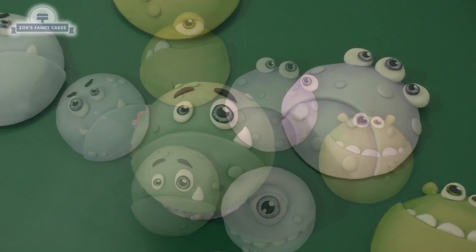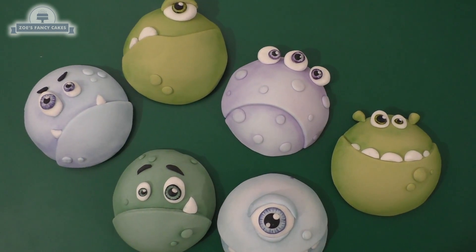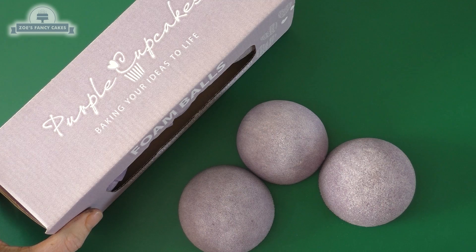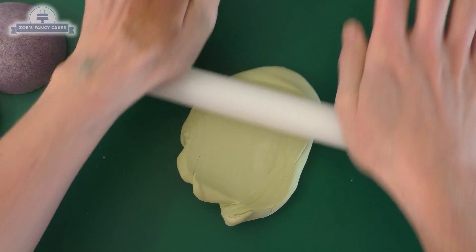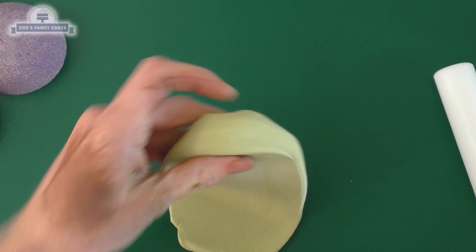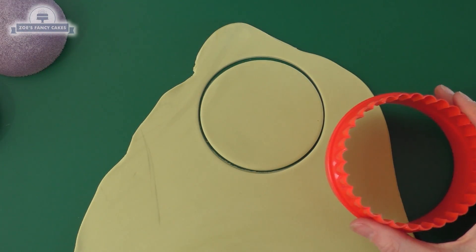Hi guys, in this video we're going to make some monster cupcake toppers. We're going to use these foam balls to create a dome shape for the top of our cupcakes. I've dyed some fondant in a gooseberry green and I've covered my hand in food coloring which I'm struggling to get off.